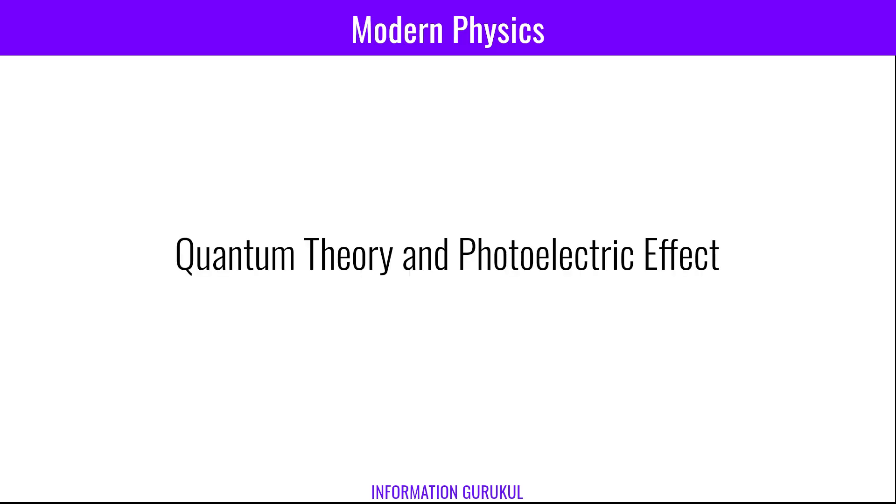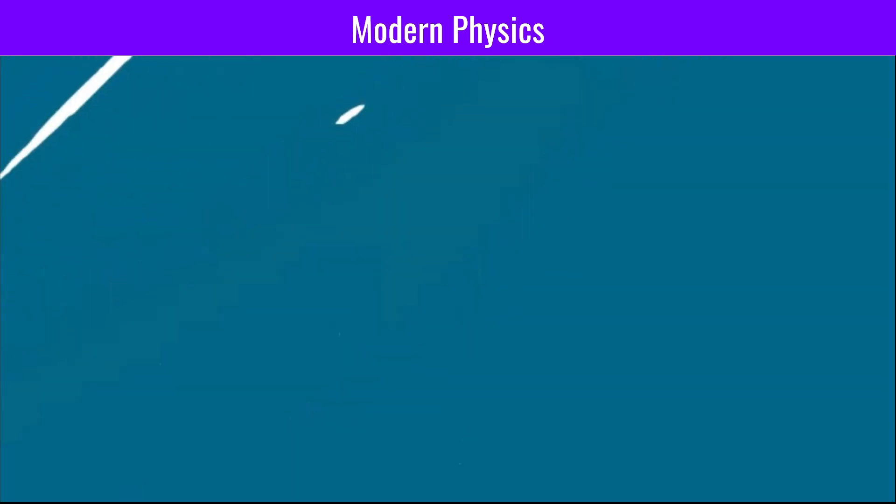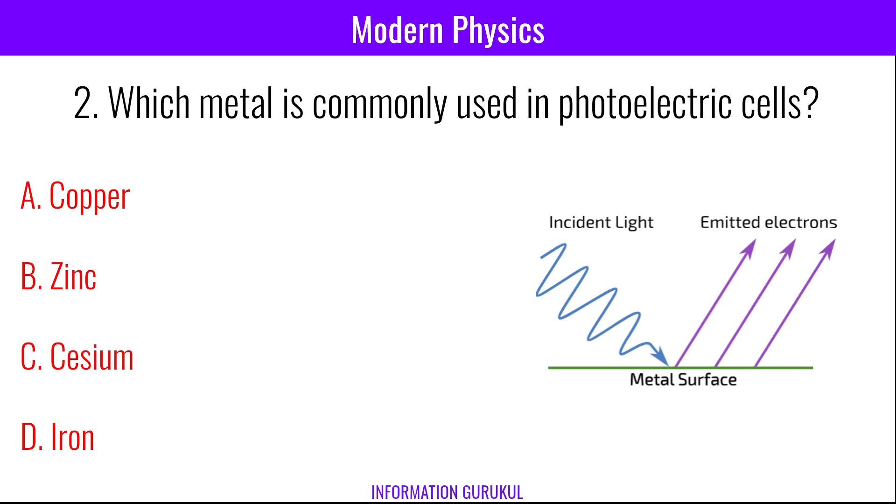Photoelectric effect demonstrates the particle nature of the light. Which metal is commonly used in photoelectric cells? Cesium.